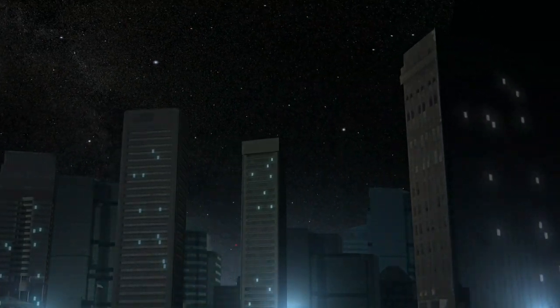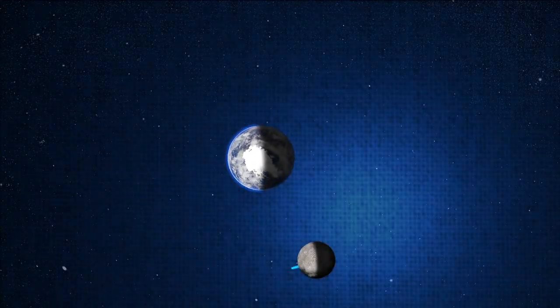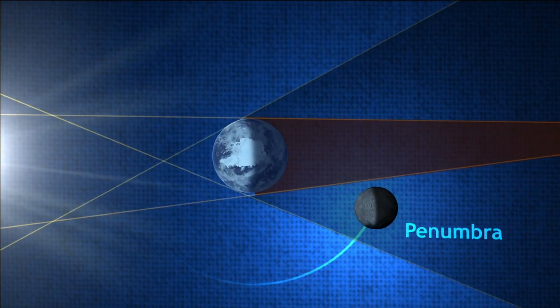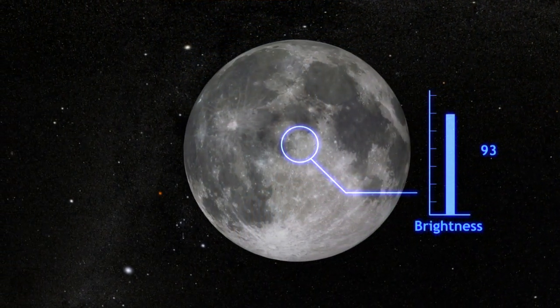If we were to look at what happens from space during an eclipse, it would go something like this. First, the Moon passes through what's called the penumbra, where the Sun's light is only partially obscured. This results in only a slight darkening of the Moon.